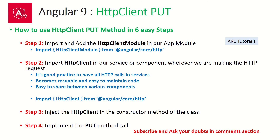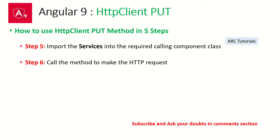Step 2: import HTTPClient into a service or component where you are making HTTP calls — it's good practice to keep all HTTP calls in services for maintainability and reusability. Step 3: create an instance of HTTPClient in the constructor. Step 4: implement the PUT method. Step 5: call it from the component where you need to use it. These are the six steps — now let's start coding.